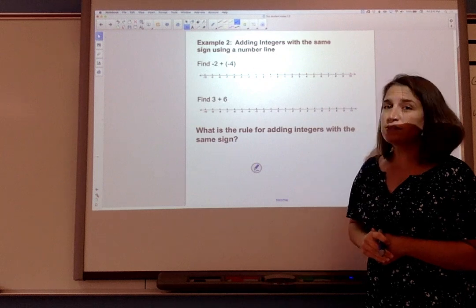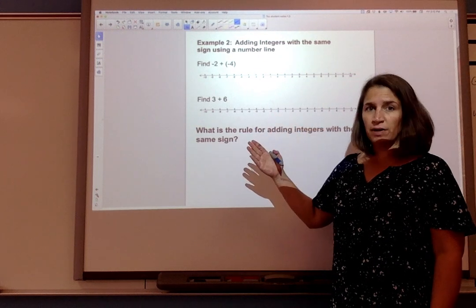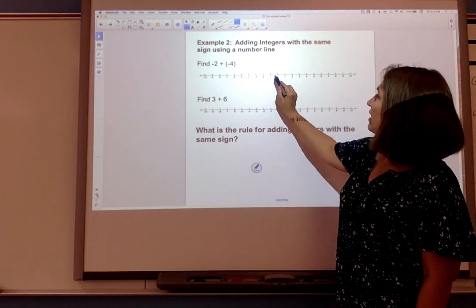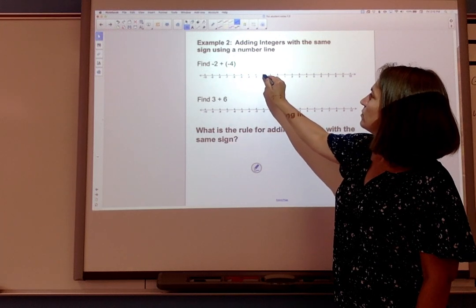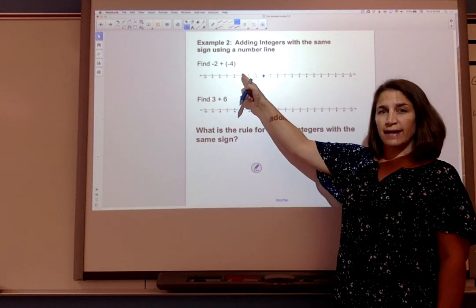I can also model this addition on the number line. So I'm gonna do the same two problems. Here's -2 and negative 2 is to the left of zero. It's right here so do that on your notes as well. And then we're gonna add -4.